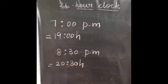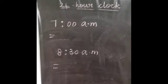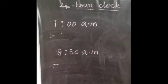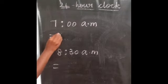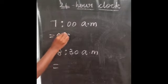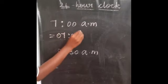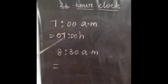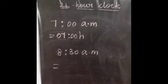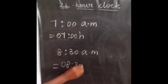This is hours and this is minutes. Now if the time is 7 AM, how do you convert into 24 hour clock time? We will write the same time as it is - 07:00. If it is AM, write the time as it is. Then if the time is 8:30 AM, we will write it as 08:30.